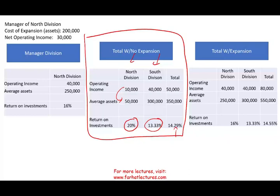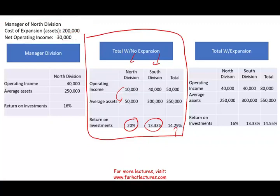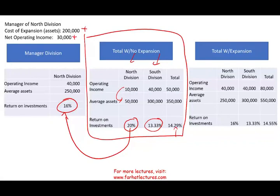Then we said let's introduce a new product for the North division. Assume the North division can expand by investing $200,000 in new assets, generating an additional $30,000 in operating income. We computed their new return on investment and found that the North division's ROI goes from 20% to 16% if they undertake this new project.